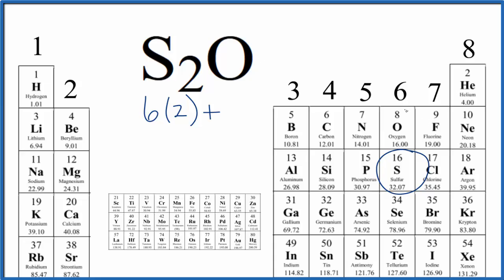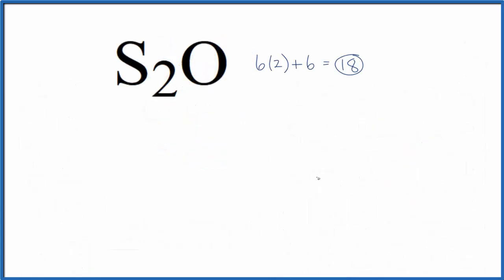And then oxygen, that's right above the sulfur, group 16, six valence electrons. So 12 plus 6, 18 total valence electrons for the S2O Lewis structure.